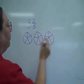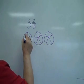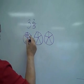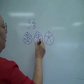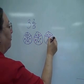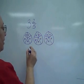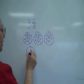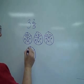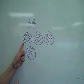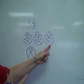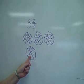If I have 3 complete wholes, that means I have 5 pieces there, 5 pieces there, 5 pieces there, and then the 2 fifths gives me that I have 2 there for a total of 5, 10, 15, or 3 times 5, plus 2.